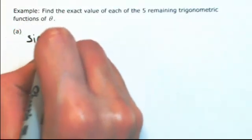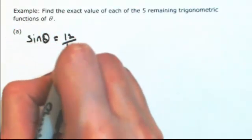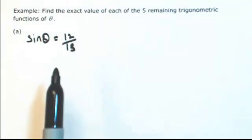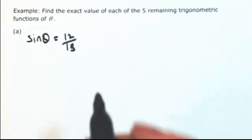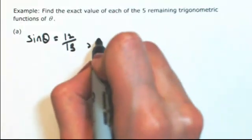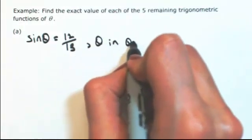For example, let's say that the sine of theta is 12 over 13. Now this could happen in two quadrants because sine is positive in the first and the second. So you need to be told where this is. I'm going to tell you that theta is in quadrant 2.